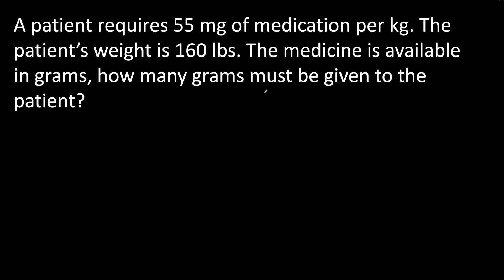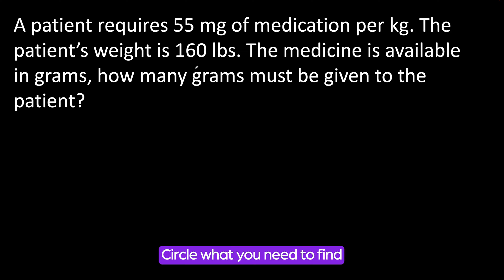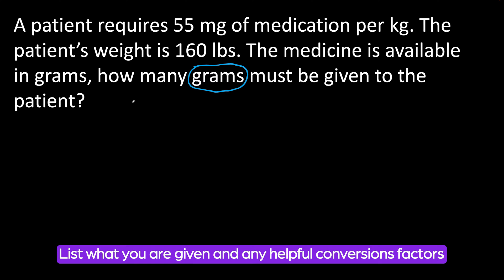First, let's circle what we must find. We need to find grams, so circle grams. Now let's list what we are given in this problem. We are given the patient's weight: 160 pounds. What else are we given? We are given the dosage: 55 mg per 1 kg.